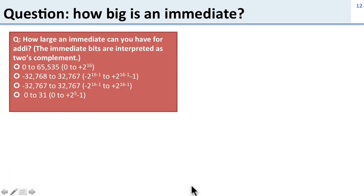So here's a question. How large an immediate value can you have for add I? The immediate bits in add I are interpreted as two's complement, so what's the range you can have for add I?